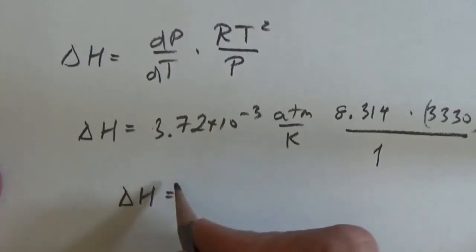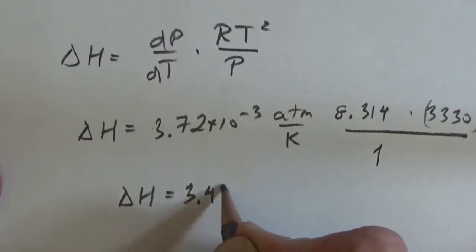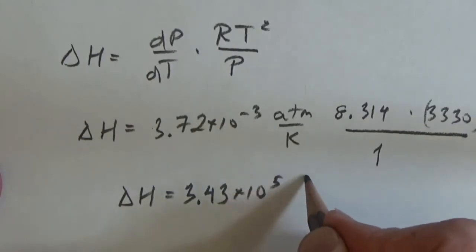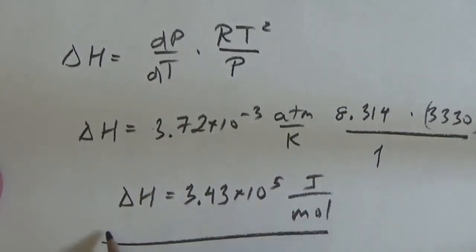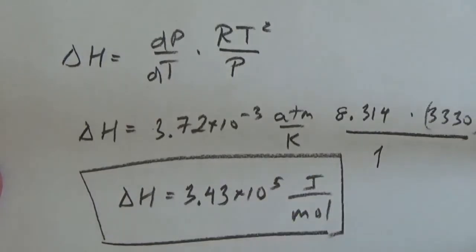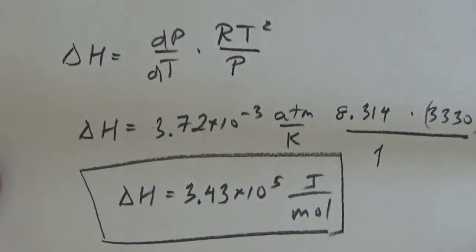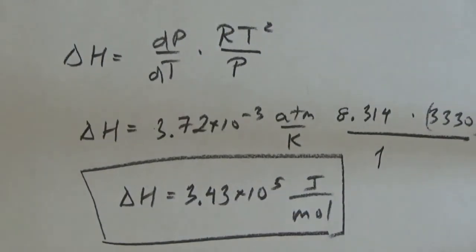Delta H is equal to 3.43 times 10 to the 5 joule per mol. That's problem 7.4.